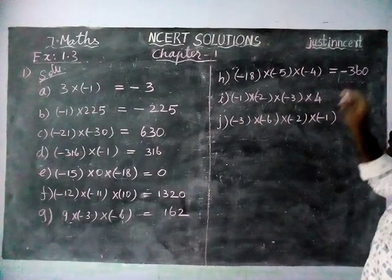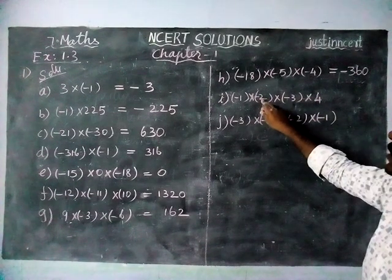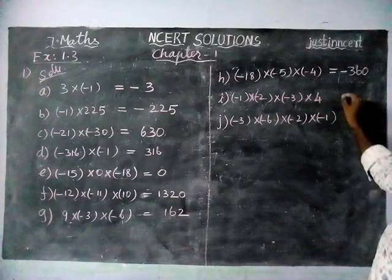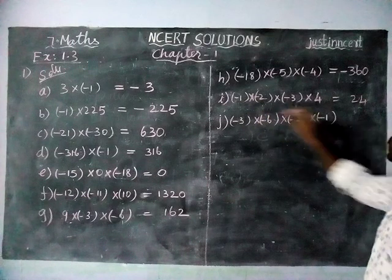And next step, 4 threes are 12, 12 twos are 24, 24 into 1 is equal to 24. Minus into minus is plus, plus into minus is minus, so minus 24.